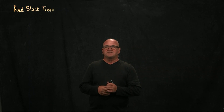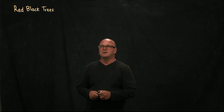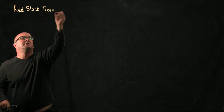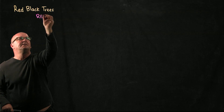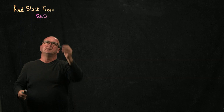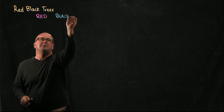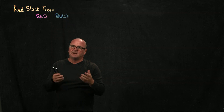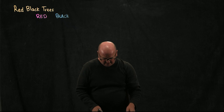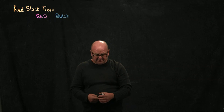We're going to look at red-black trees. I'm going to work through an example that hopefully will clarify it. I'm going to use red for red nodes, and blue for black nodes because I don't have a black pen — it wouldn't show up. So let's start with an example.